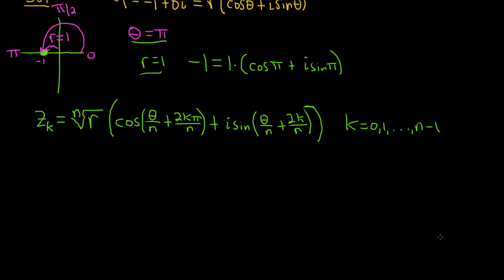So now we just have to figure all this out. Theta is pi and n is 4. Let's go ahead and plug that stuff in. So z sub k - when n is 4, you get the fourth root of 1 because r is 1, so you just get 1. This whole piece here is 1.